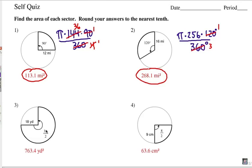3 and 4, now we're into radians. So we're actually going 3 pi over 2 around the circle, which as you can tell is 3 fourths of the way around. And we have a radius of 18 yards.